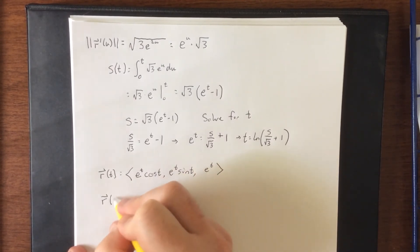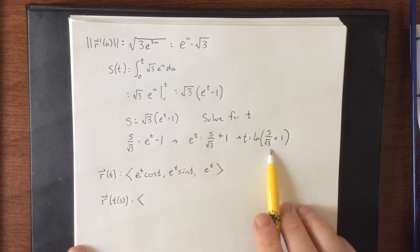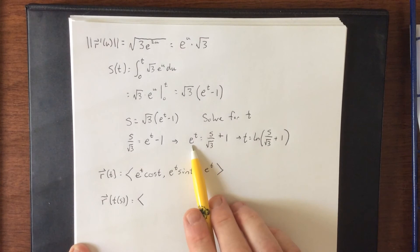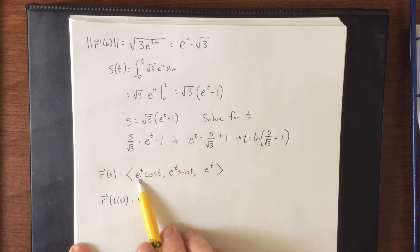So to reparameterize this with respect to arc length is to say let's go ahead and plug in this for t. Now one thing that will make this process a little bit easier is that we also know what e to the t looks like. So anywhere there's an e to the t, I can replace it with this expression instead of replacing t with this expression.